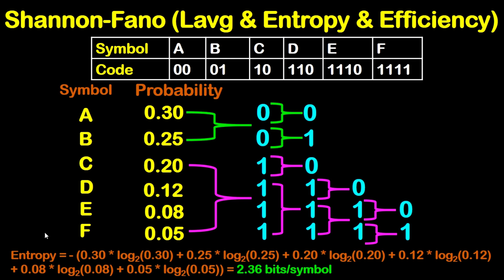Now let's get the entropy. To be able to get the entropy, this will be equal to negative, then open a bracket. Inside the bracket, multiply the probability for each symbol by log base 2 of the probability. So for symbol A, 0.3 by log base 2 of 0.3. Plus 0.25, which is probability of B, multiply by log base 2 of 0.25.